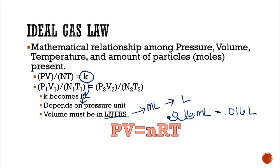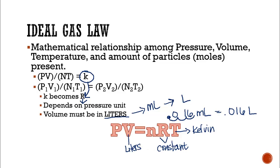If we change our K to R and rearrange this equation, we get what I like to call PevNert. When you hear me talking about PevNert, I'm talking about the ideal gas law: PV equals NRT. Pressure times volume equals N — which is our moles — times R, which is that constant, times T for temperature. Don't forget, temperature still needs to be in Kelvin, V needs to be in liters, and N is in moles. Pressure and R are going to be related and depend on each other.